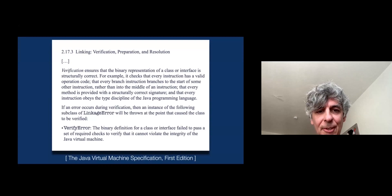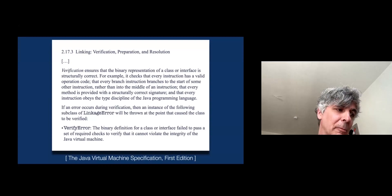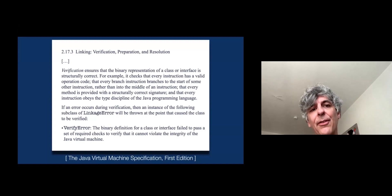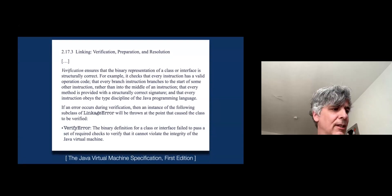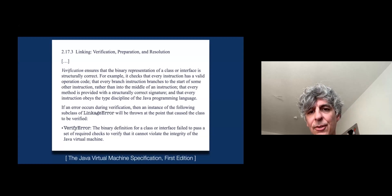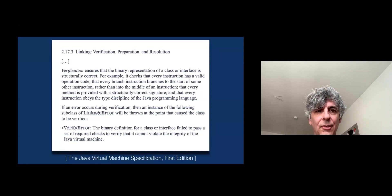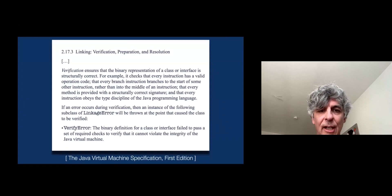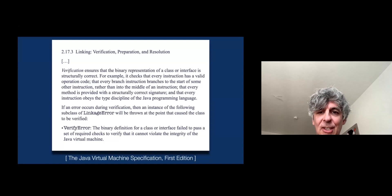Unsurprisingly, this led to problems down the road. There were bugs discovered — soundness bugs even. Implementations disagreed on how to interpret this. Moreover, they found it's actually quite hard to implement correctly, because if you want to do it correctly in the way it was envisioned with the JVM, you had to do a fixed-point iteration on the bytecode to type-check it. This is not how you should be doing it — it just leads to problems.